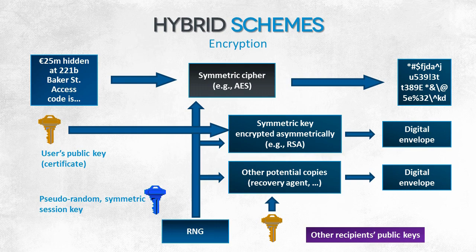You have successfully generated it. Next, you should asymmetrically encrypt the generated symmetric key using, for example, RSA or ElGamal. The output is saved with the ciphertext. This will allow you to include copies of the key that are encrypted using other system users' keys.